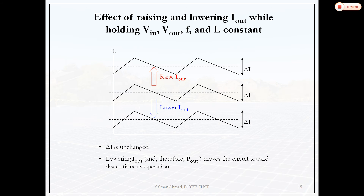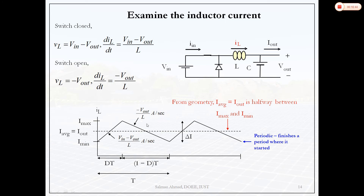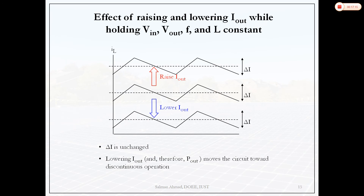In continuous conduction mode, the inductor current does not reach zero before the next switching cycle starts — it begins from some positive value, rises to a higher value, then returns to that same value each cycle. If the current reaches zero and remains zero until the next switching cycle starts, that is called discontinuous conduction mode (DCM). By changing I_out or the load, the converter may operate in CCM or DCM, and we must decide which mode to design for.